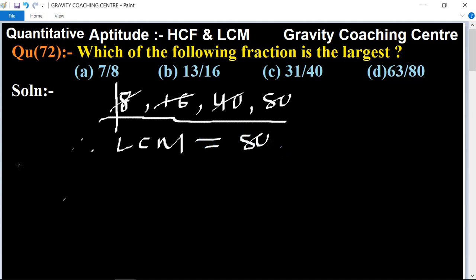First option is 7 upon 8. 7 upon 8 multiplied by 10 upon 10 equals 70 upon 80.